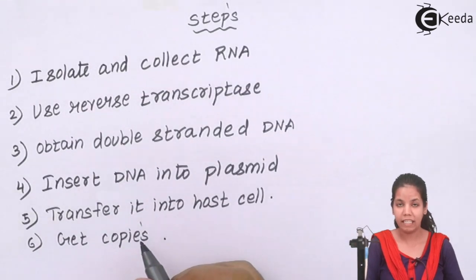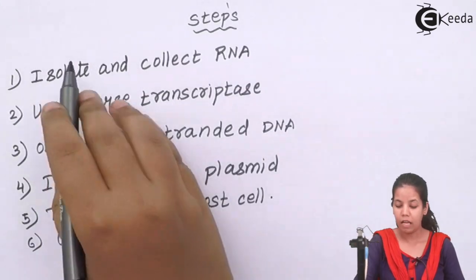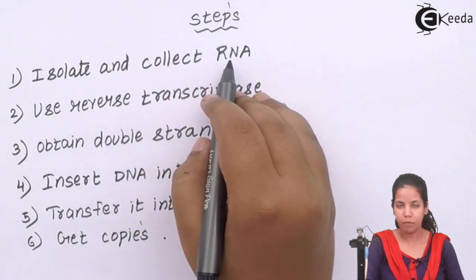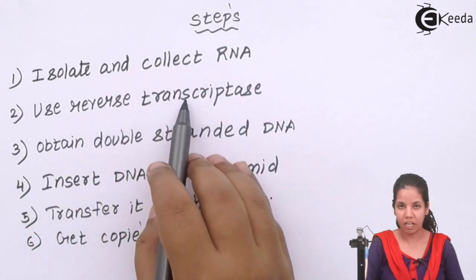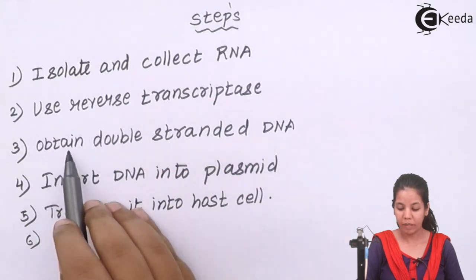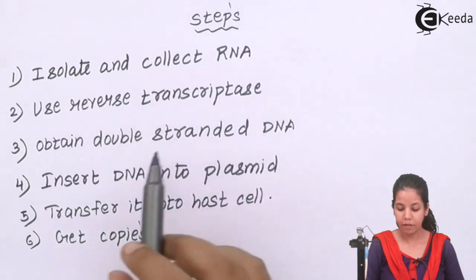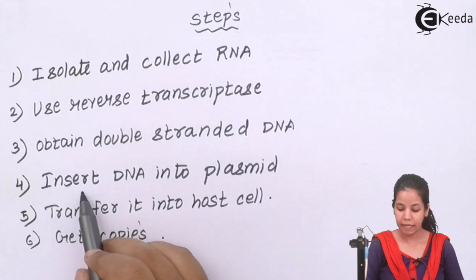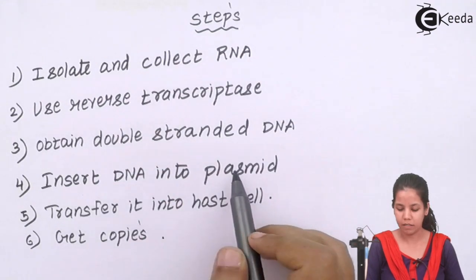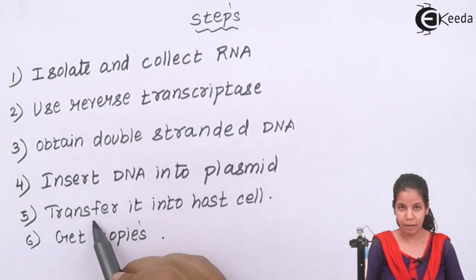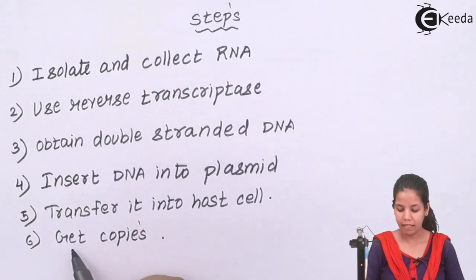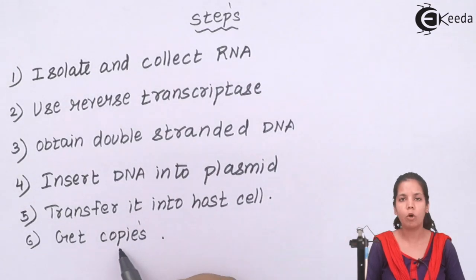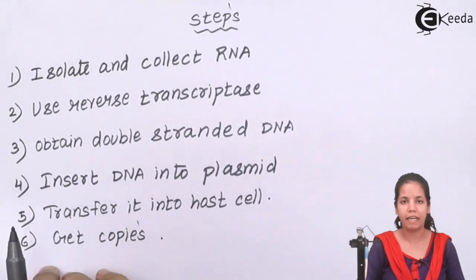The steps of making a cDNA library are: first, isolate and collect single-stranded RNA; second, use the reverse transcriptase enzyme; third, obtain double-stranded DNA; fourth, insert the DNA into a plasmid; fifth, transfer it into a host cell; and finally, obtain multiple copies of the double-stranded DNA.